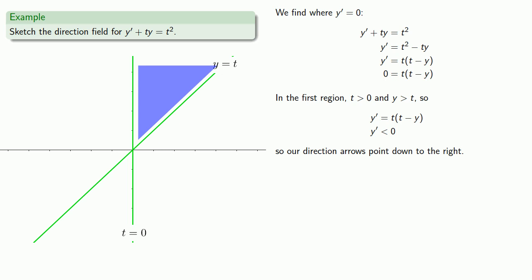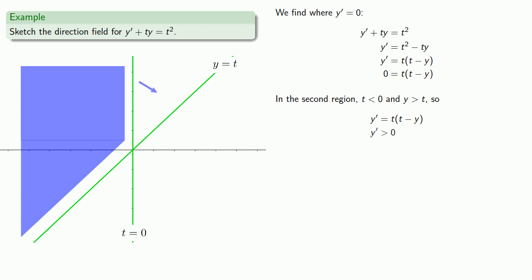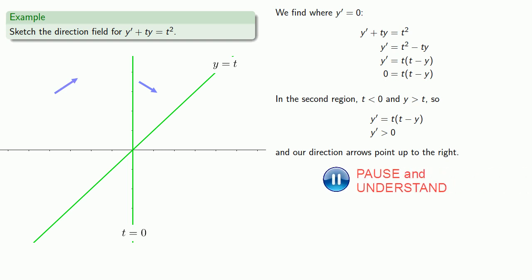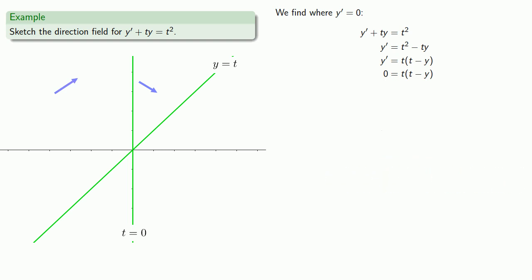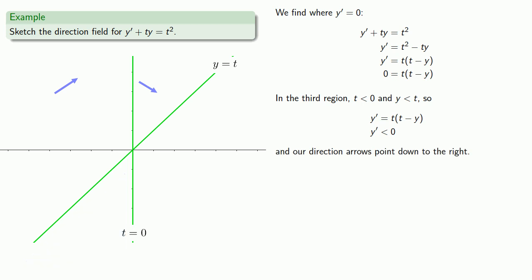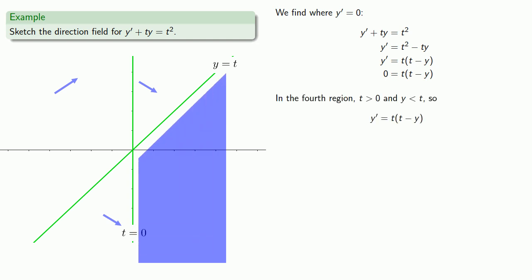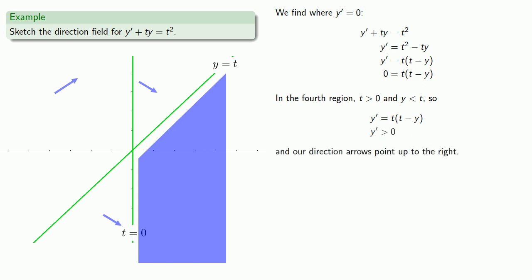In the second region, t is less than 0 and y is still greater than t, so our derivative is going to be greater than 0, and the direction arrow will point up to the right. In the third region, t is negative and y is less than t, so y' will be negative, and our direction arrow will point down to the right. In the fourth region, t is greater than 0 and y is less than t, so our derivative will be positive, and direction arrows will point up to the right.